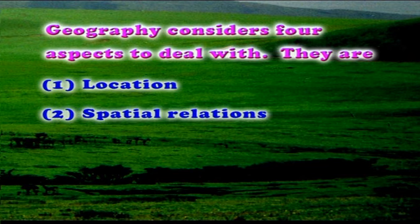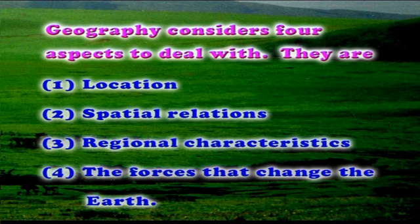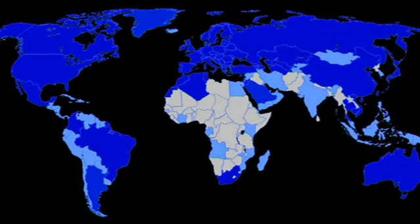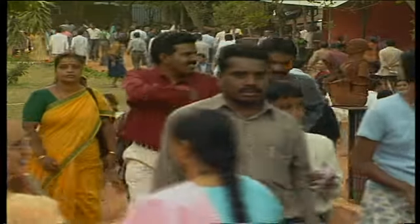Geographers also look for patterns in human economic, political and social activities, and try to find out why these patterns exist differently in different places. Geography considers four aspects: location, spatial relations, regional characteristics, and the forces that change the features of the Earth. Geography is the scientific study of the location and spatial variation of both physical, biological and human phenomena on the Earth.